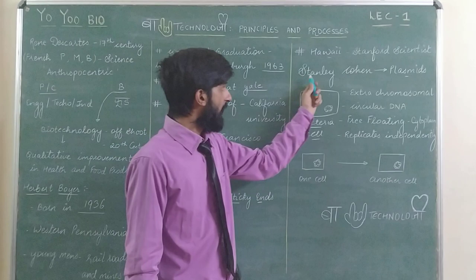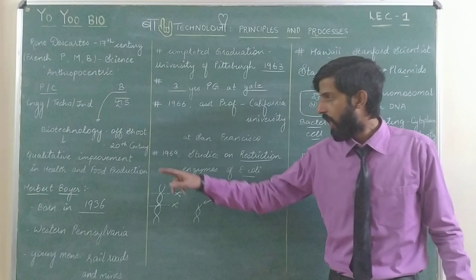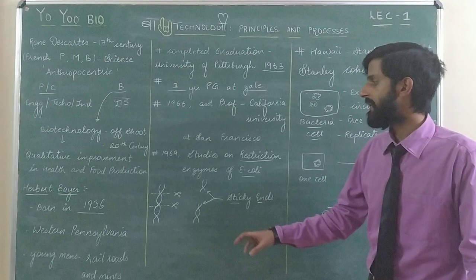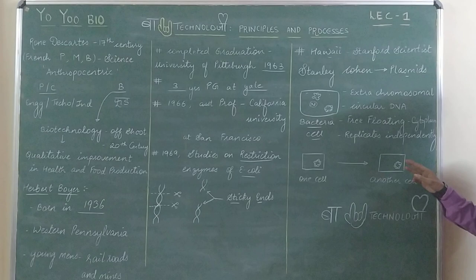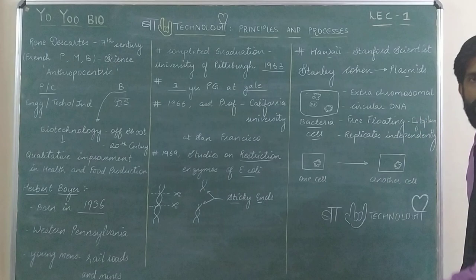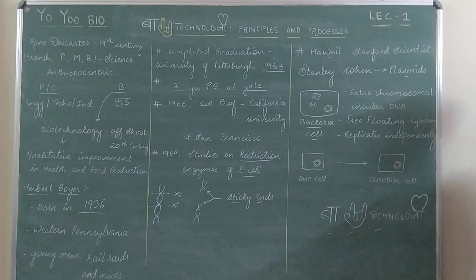Stanley Cohen's idea was to take a plasmid out of one cell and put it into another cell. And he thought: why not combine this idea with Herbert Boyer's idea of cutting DNA? For example, if you cut out a useful DNA piece from some bacteria and insert it into this plasmid, then take that plasmid from one cell and put it into another cell — this plasmid acts as a vector or carrier to deliver the desired gene to another cell. When both ideas combined, this fantastic field emerged, which we call biotechnology.